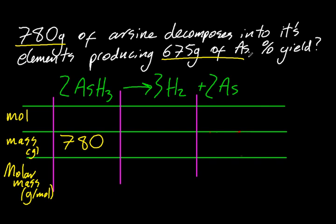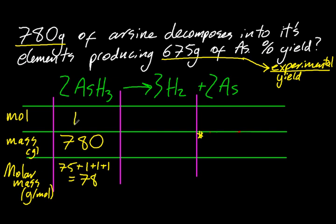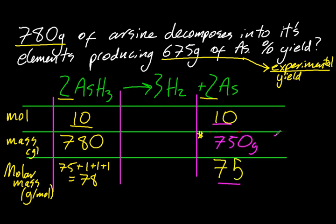The number you get from the table is the theoretical yield, what you get in a perfect world. So this table gives you the theoretical yield. I put a little star there, because that's the number I want to work out. Do some simple stoichiometry. 2 is to 10 as 2 is to 10. So that gives me 750 grams in a perfect world. My theoretical yield is from the table.